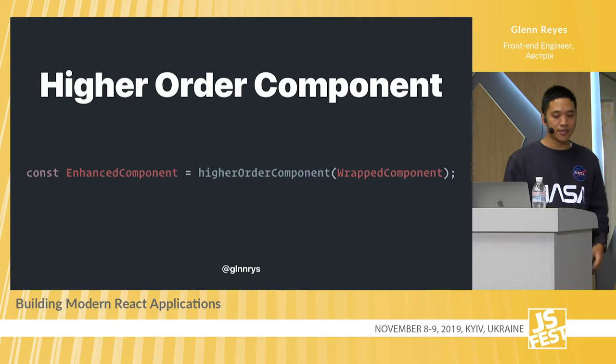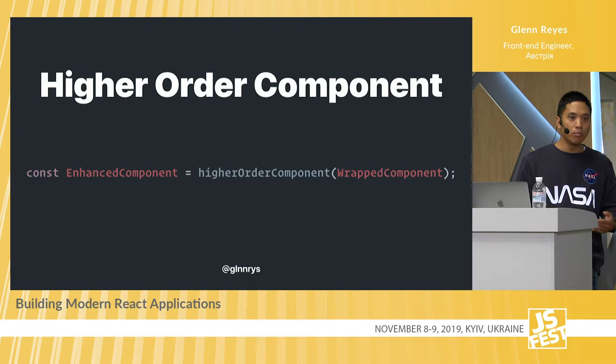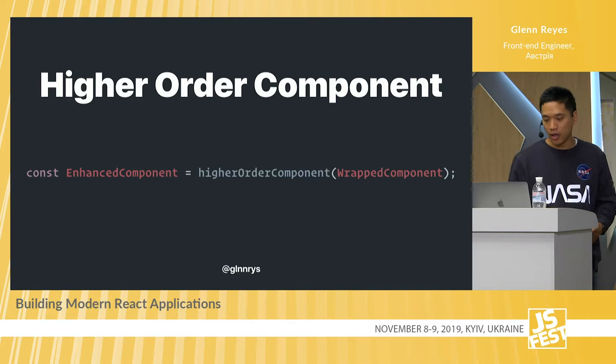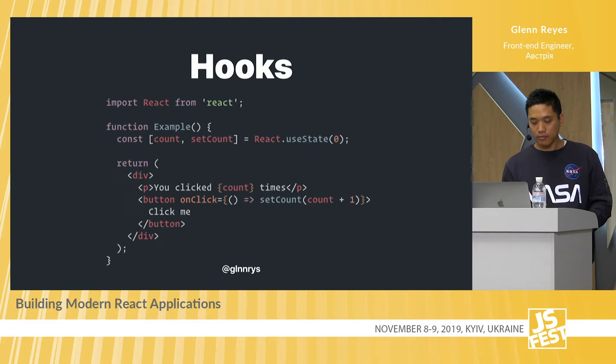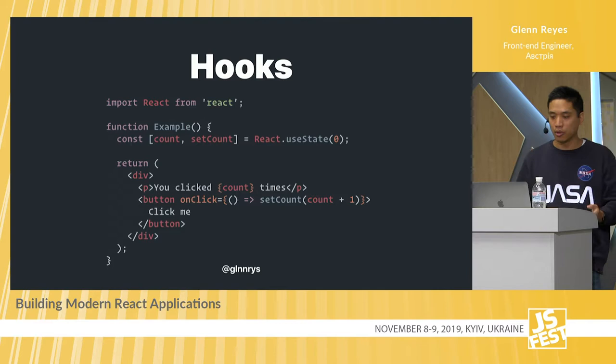Let's take a quick view into common patterns we've seen over time. Higher Order Components in the early days — a function that takes a component and returns a new component, allowing you to inject new props. There are also render props, where children as a function allows you to isolate props between other props of your parent component. And now we have hooks, which allow you to put state into function components.